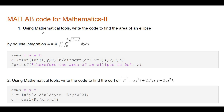The first question asks: using MATLAB mathematical tools, write the code to find the area of an ellipse by double integration — A equal to 4 times integral from 0 to a, integral from 0 to (b/a) times square root of (a² minus x²) dy dx. For this, the code uses syms x y a b; A = 4 * int(int(1, y, 0, (b/a)*sqrt(a^2 - x^2)), x, 0, a). That is the code for double integration.